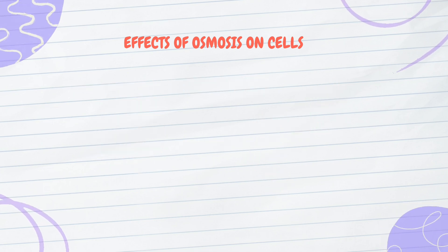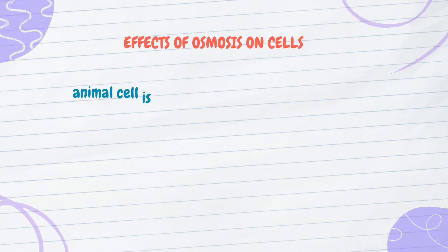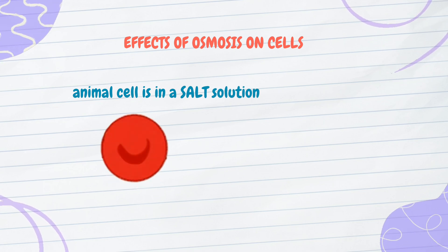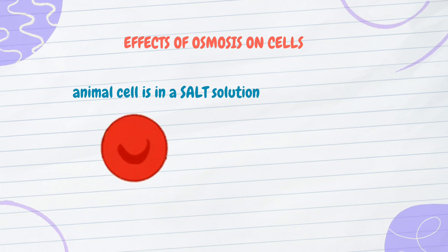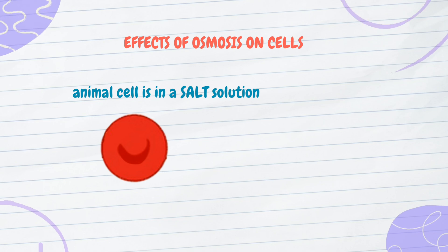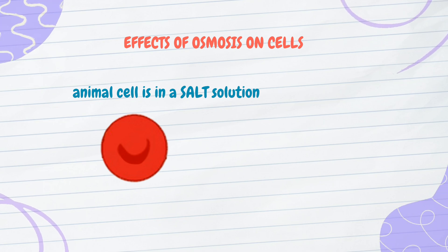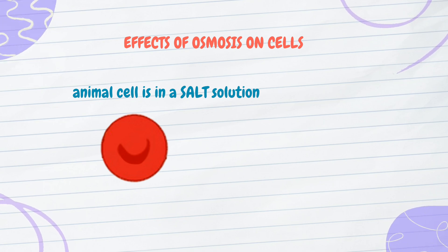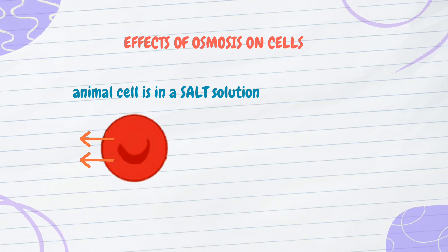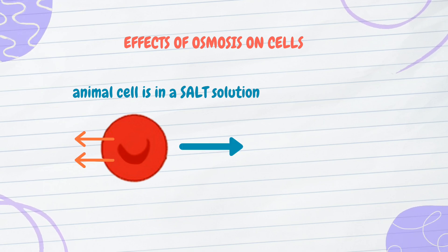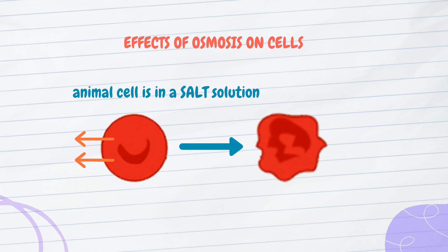Finally, what happens when an animal cell is in a salt solution? A salt solution is a hypertonic solution — it has a higher solute concentration than the cytoplasm. When an animal cell is placed in the salt solution, water molecules move from the cell to the salt solution. The cell becomes dehydrated and eventually shrinks.